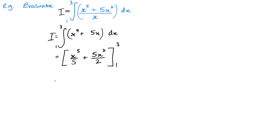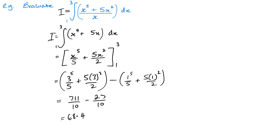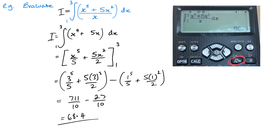The limits are 3 and 1. Integrating gives x to the power of 5 over 5 plus 5x squared over 2, with limits 3 and 1. There's no plus c. So we get 3 to the power of 5 over 5 plus 5 lots of 3 squared over 2, minus 1 to the power of 5 over 5 plus 5 lots of 1 squared over 2. This gives 711 over 10 minus 27 over 10, which is 68.4. Remember to use the calculator button to double-check.